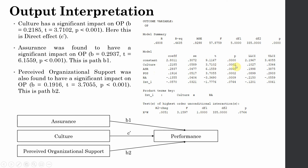The interaction effect tests whether role ambiguity moderates the direct relationship between culture and performance. In this case it is significant — if taken as one-tailed (dividing the p-value by two), it is less than 0.05, indicating a significant moderating role of role ambiguity. The R-squared change is also significant when taken as one-tailed.